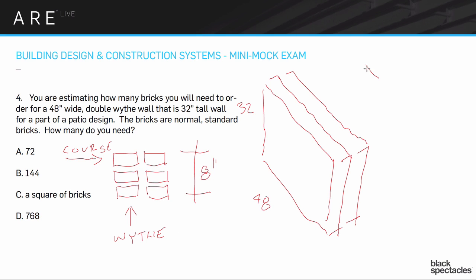A typical brick is eight inches by four inches. The height is the odd dimension — it's about one-third of the eight inches, so most people think in groupings of three bricks because it makes calculations easier. Just like CMU, the actual dimension is closer to seven and five-eighths inches, but nominally we use eight by four.